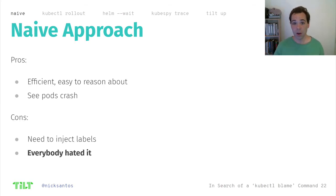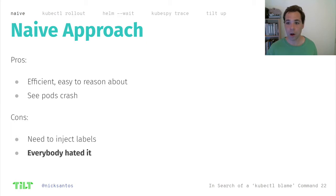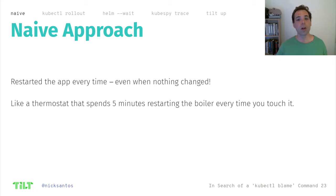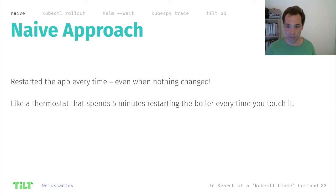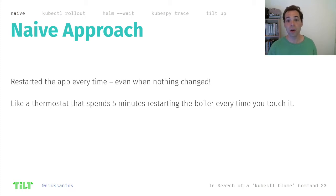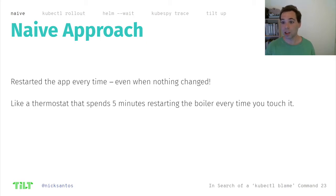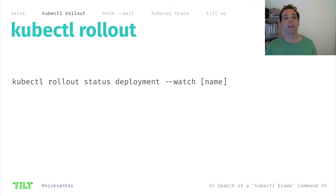Then we launched it, and everybody hated this and complained all the time. Because we had made a mistake. We assumed that Kubernetes would see the label on the pod template and see that was the only thing that had changed, so it would update the existing pod with the new label. That is not what happens. What happens — and the way it's specified — is that the deployment controller will notice that the pod template spec has changed and replace the pod entirely. It was very important to people that if nothing changes, the pod should stay as is, shouldn't restart. People hated the behavior where it restarted every time. So we looked for alternatives.